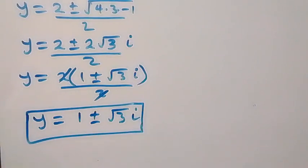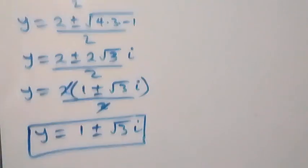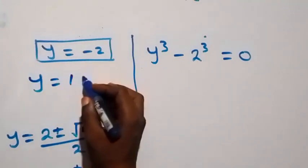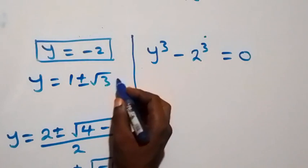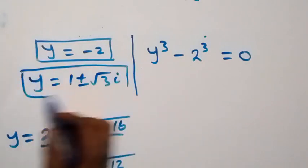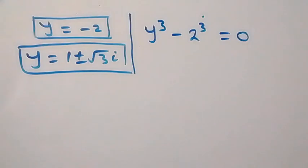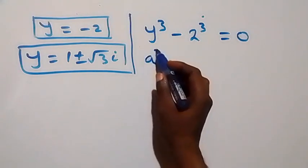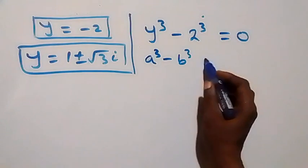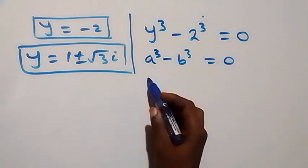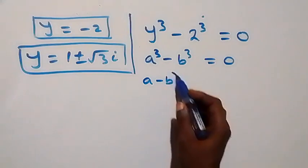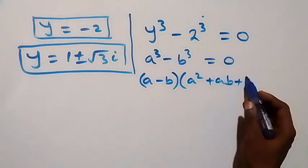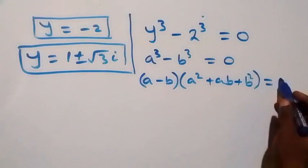So we have two complex solutions: y equals 1 plus or minus root 3 i. Now for the second case, y raised to power 3 minus 2 raised to power 3 equals to zero. This follows the identity a cubed minus b cubed, which can be written as (a - b)(a² + ab + b²).